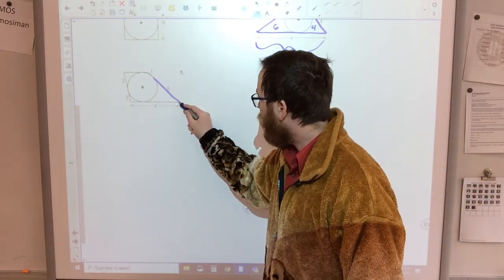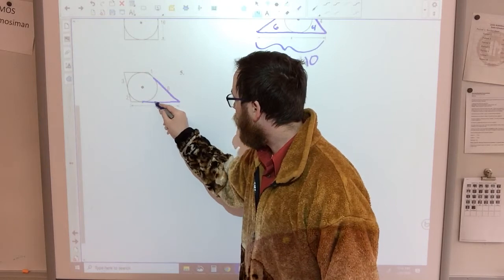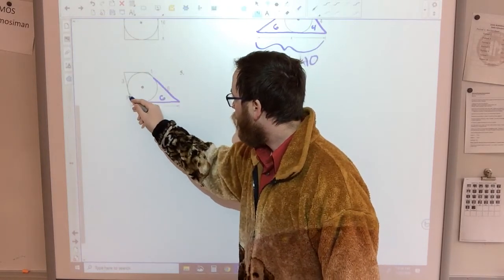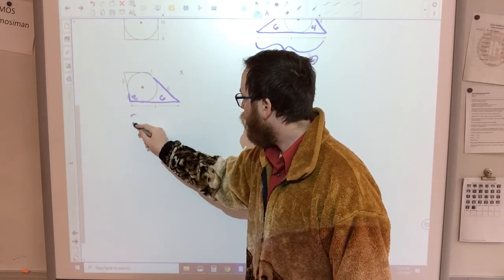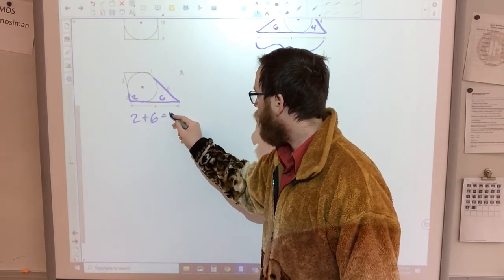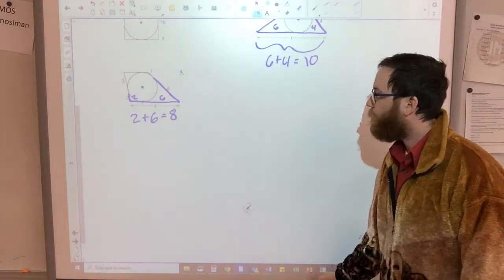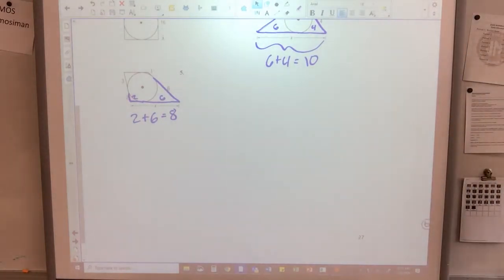This length right here is congruent to this length right here, so that's 6. 2 is congruent to this length, so that's 2. 2 plus 6 is 8. So x is equal to 8 in number 5.